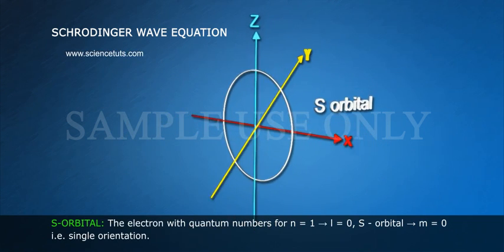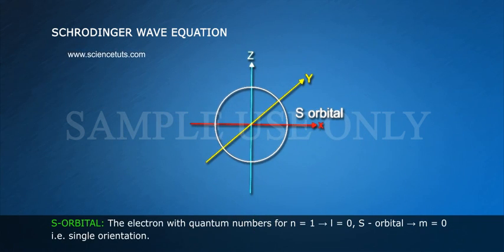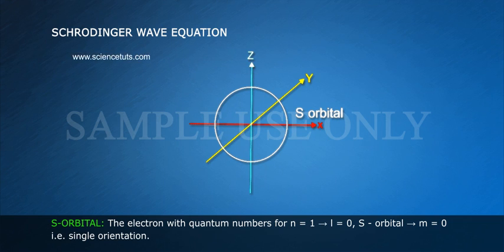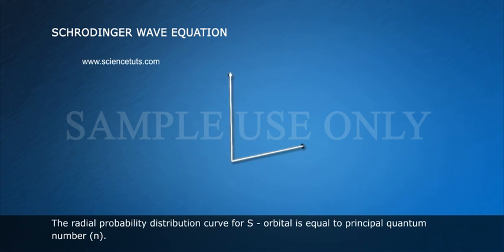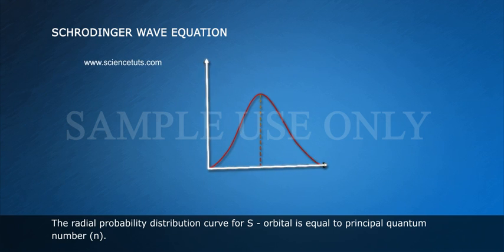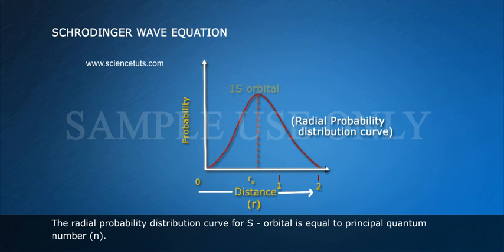S orbital. The electron with quantum numbers n = 1, l = 0 corresponds to S orbital, with m = 0. That is, single orientation. The radial probability distribution curve for S orbital depends on the principal quantum number, n.